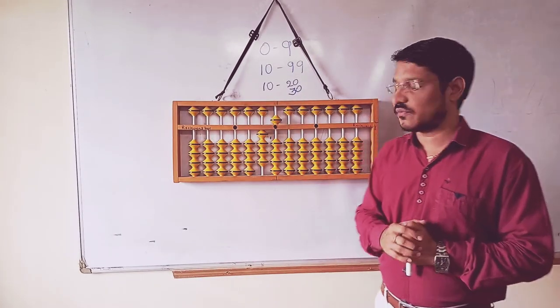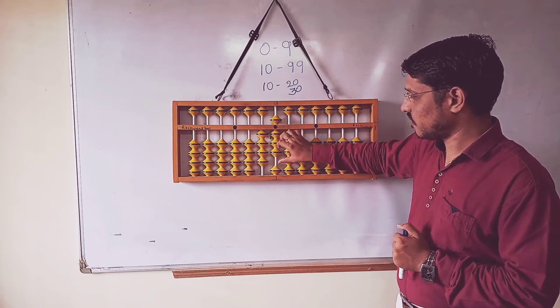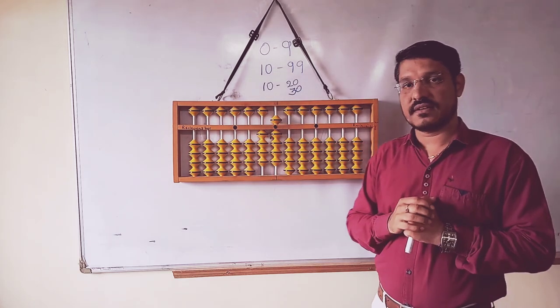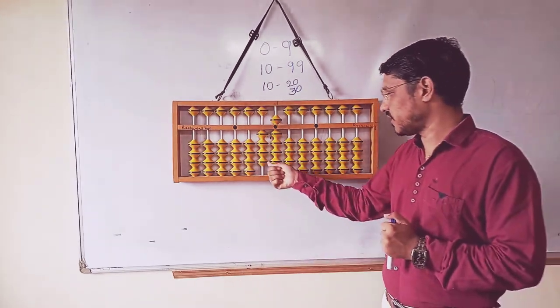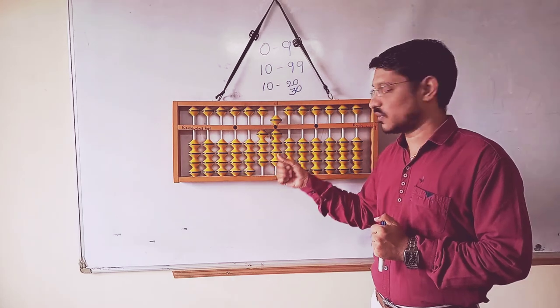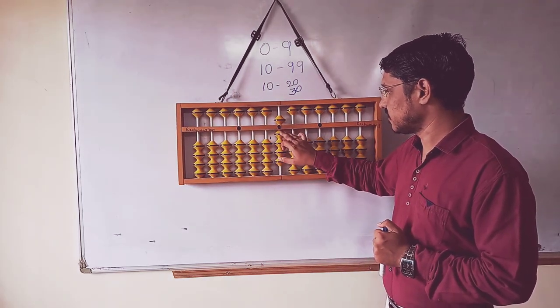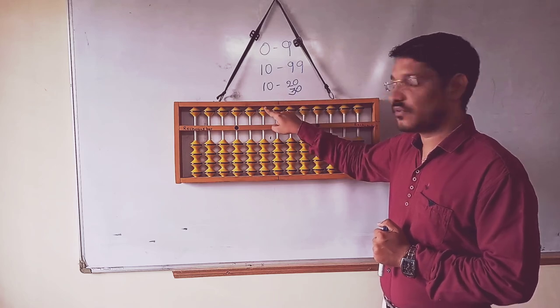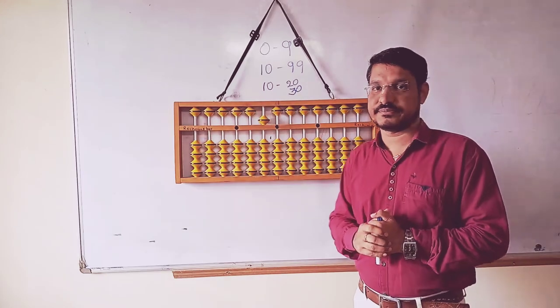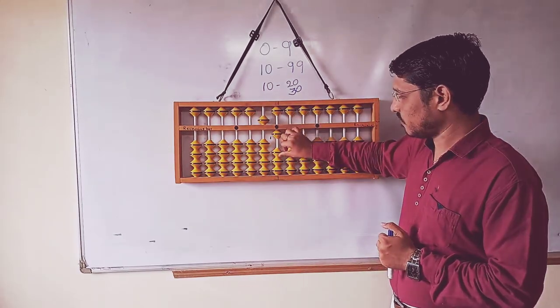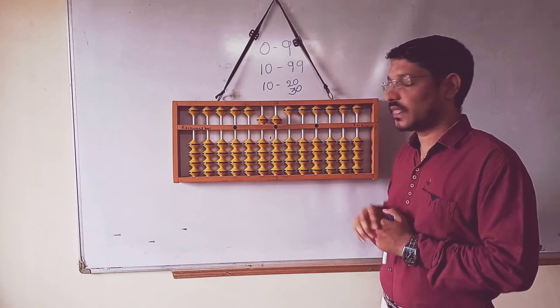The same thing, again come back for 40. 4, 0, 40. 41, 42, 43, 44, 45, 46, 47, 48, 49. 50, you don't have any beads here, so all should come down like this. It's a value of 5, 0, 50. 51, 52, 53, 54, and 55.